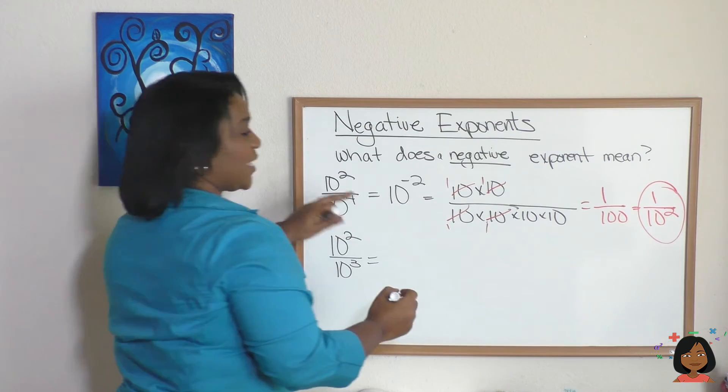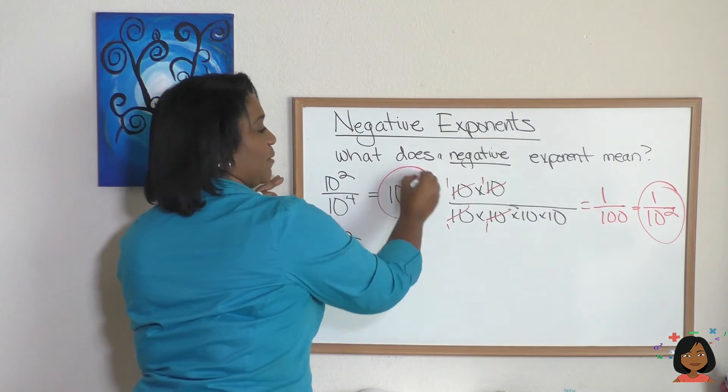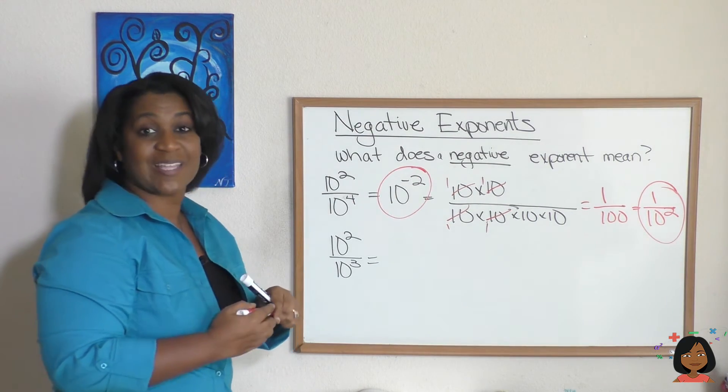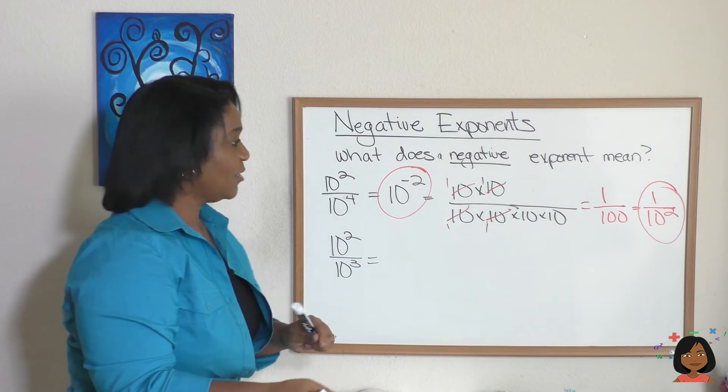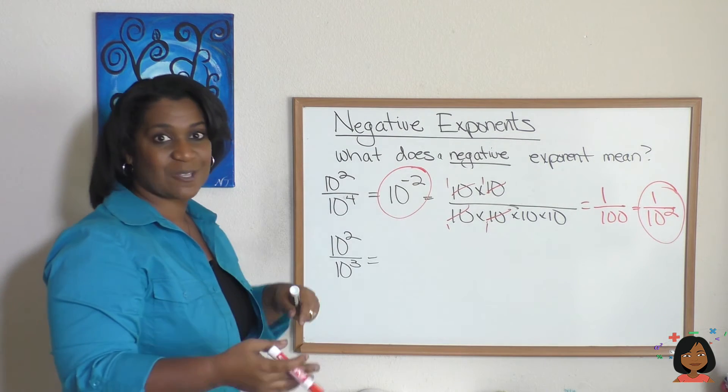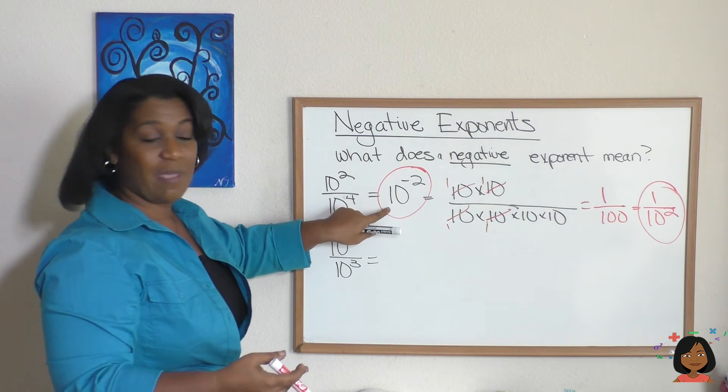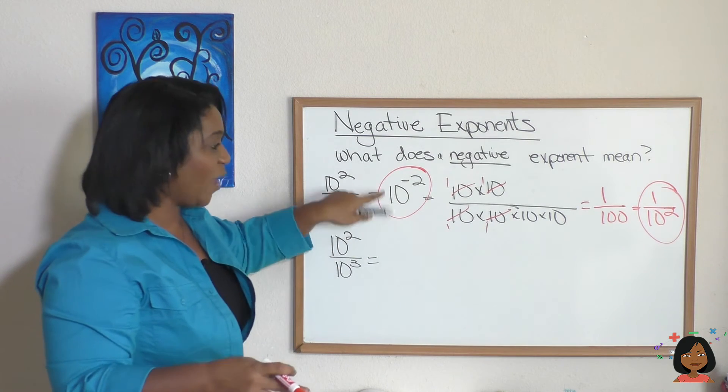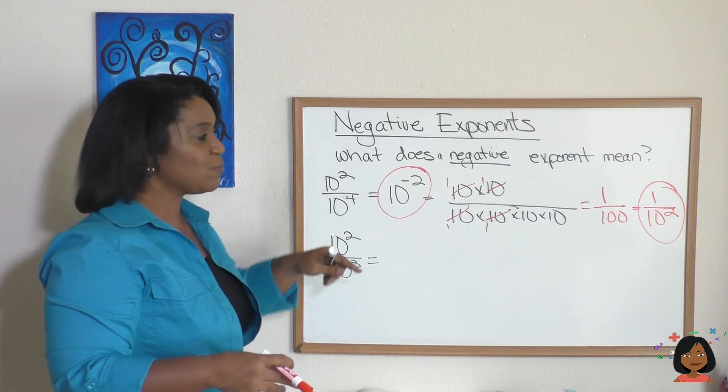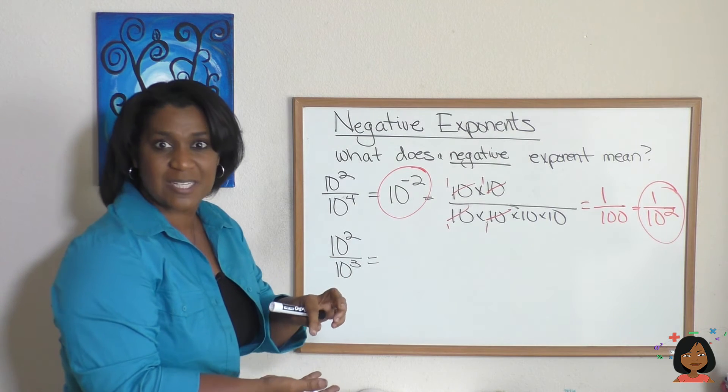So what does that mean with our negative exponent? A negative exponent always translates to a fraction. 1 over 10 squared. So you just flip it, you make it a fraction, the reciprocal, right? 1 over 10, and that exponent becomes positive when it's in the denominator.